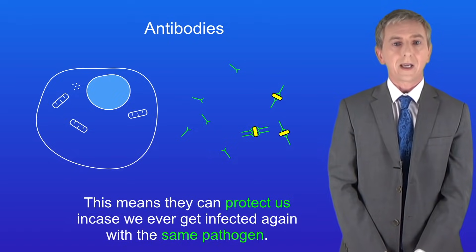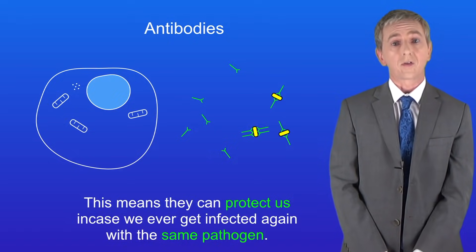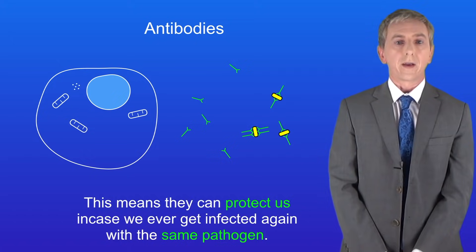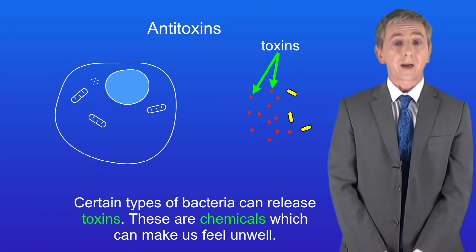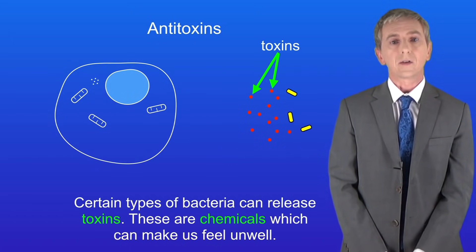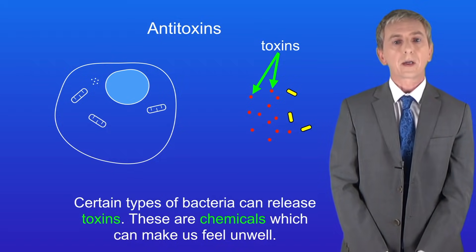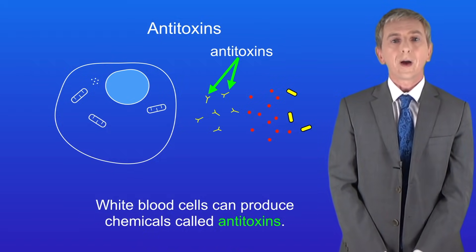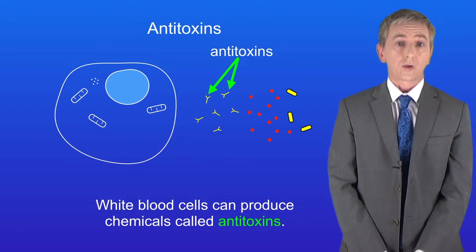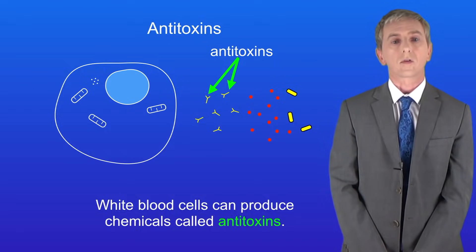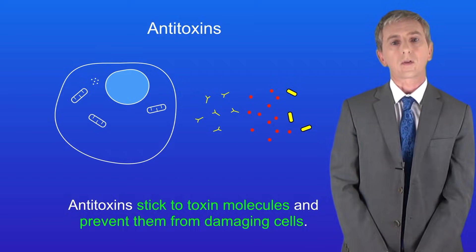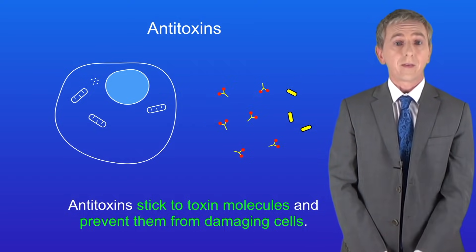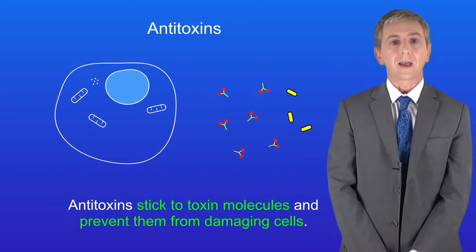White blood cells protect us against pathogens in another way. Certain types of bacteria can release toxins, which are chemicals that can make us feel unwell. White blood cells can produce chemicals called antitoxins. Antitoxins stick to toxin molecules and they prevent them from damaging cells.